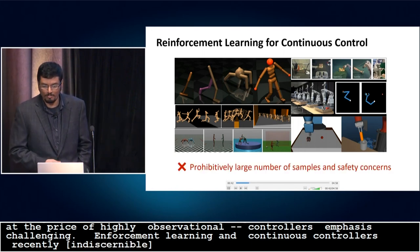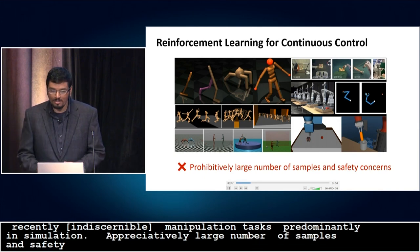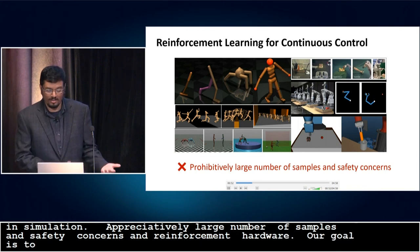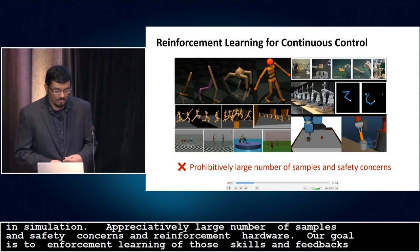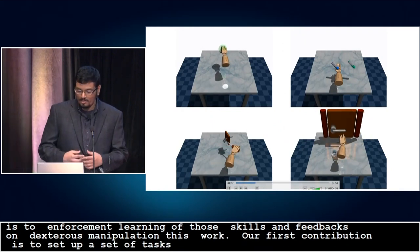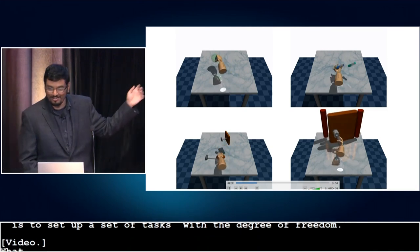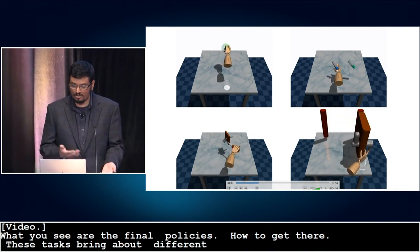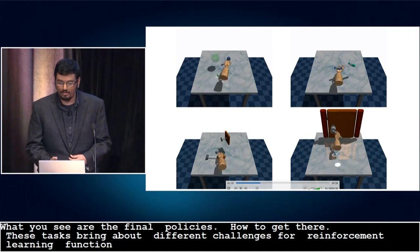A prohibitively large number of required samples and safety considerations prevent the direct use of reinforcement learning on hardware. Our goal is to reduce sample inefficiency so that reinforcement learning can be used for real-world learning of diverse skills, and in particular we focus on dexterous manipulation. Our first contribution is to set up a diverse suite of tasks with the 24 degree-of-freedom Adroit hand. These tasks bring about different challenges for reinforcement learning, such as exploration and function approximation, and the agent has to carefully coordinate all hand joints to manipulate the object of interest.